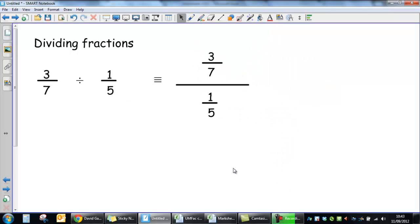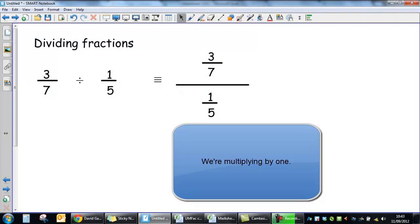One way that we could write this, and obviously we don't normally do this, but there are times when it helps. So 3 over 7 divided by 1 fifth is equivalent to writing it as a sort of super fraction like this one, 3 sevenths divided by 1 fifth.